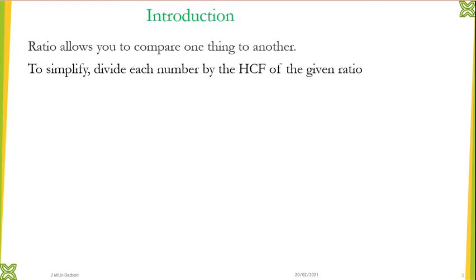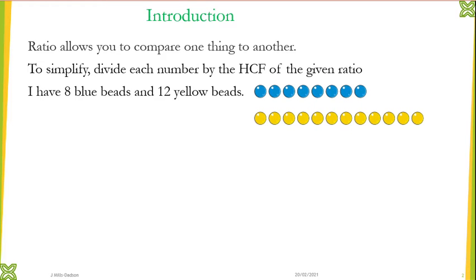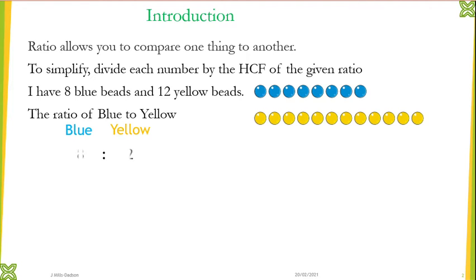For example, I have eight blue beads and twelve yellow beads. If I need to write a ratio of blue to yellow, I could express that in the form of ratio. In ratio, order is very important — if blue is mentioned first you need to stick to blue first before yellow; swapping the order changes the whole ratio. So the ratio of blue to yellow: I count the number of blues, so I have eight blues and twelve yellow. Now we use a colon to represent the ratio.